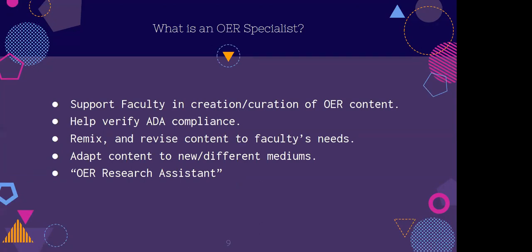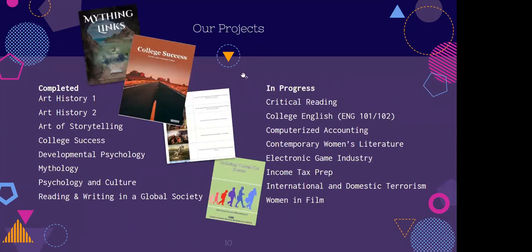We also help faculty to know that there is someone there to act as a research assistant in whatever range they need help with. Our projects range from everything from traditional textbooks to what we call resource banks, which are in our LMS — we use Canvas. They are groups of resources and links as well as chapters and textbooks that we've organized to help teachers teach right out of Canvas instead of having students need to get a physical textbook. We've completed quite a few courses and learned a lot along the way.